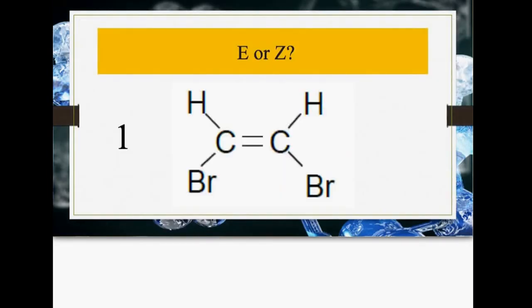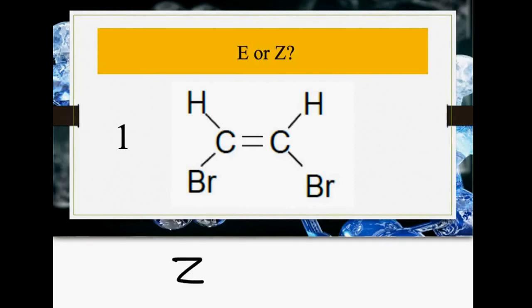Let's go through some examples now which are going to get progressively harder. You have to say if it's E or Z. Pause the video now and have a go. The correct answer here is Z. When you're practising, don't worry about naming the full thing at first. But this is Z1,2-di-bromo-ethene.